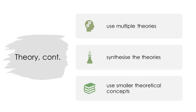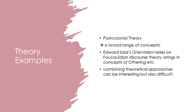A good tie-in to examples is post-colonial theory, which we'll be talking about quite a lot. But that's not just one single theory — it's a whole broad range of concepts, some of which are in this course, some outside of it. If we think of Edward Said's work on Orientalism, it's actually a synthesis of concepts that were emerging around the same time. It relies heavily on Foucauldian discourse theory and combines it with concepts of othering, along with other lesser theoretical concepts, to provide a broader idea of Orientalist theory.